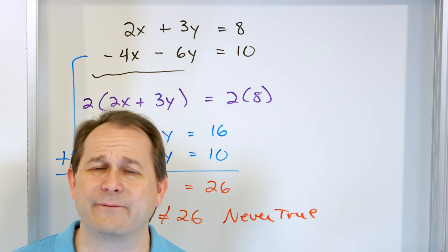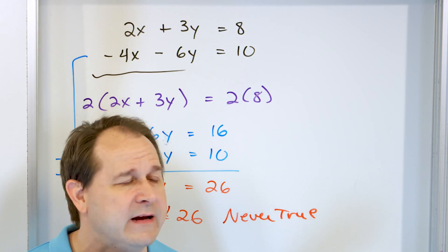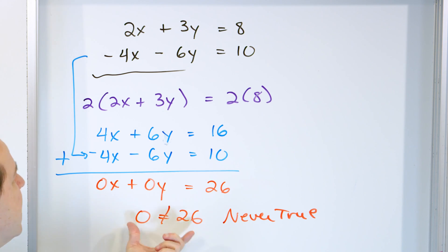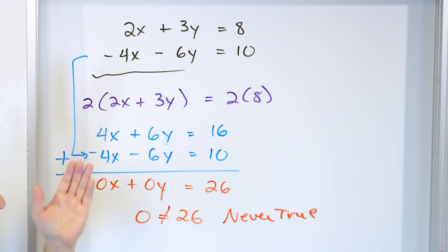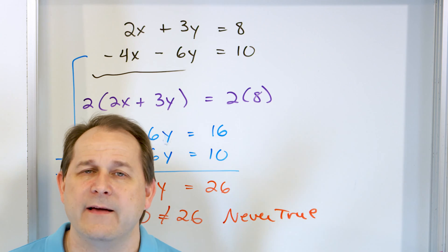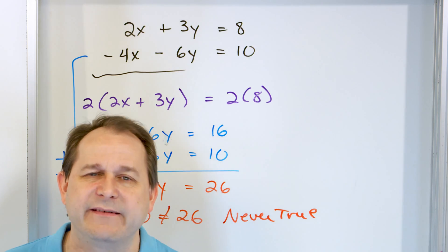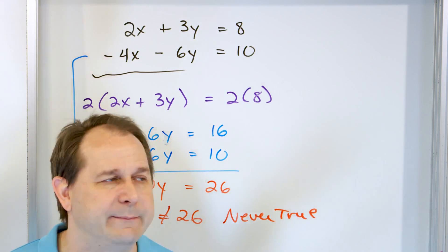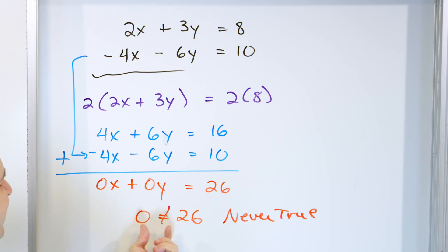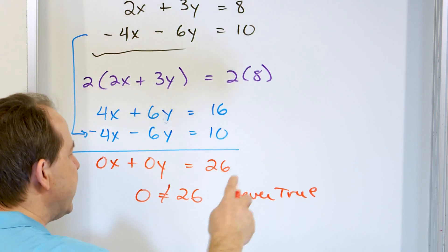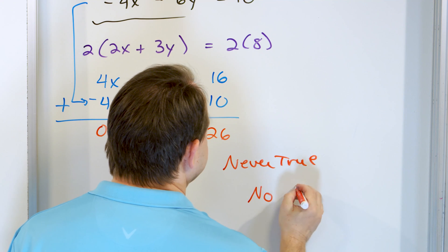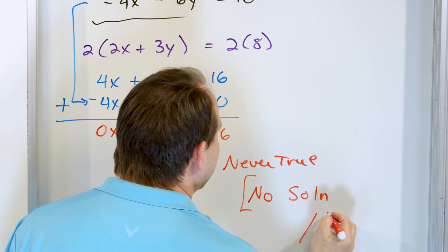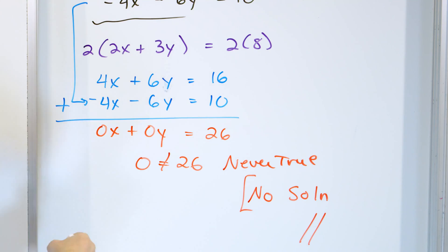This is the kind of way in which math can predict things. The answer you get is nonsense — it cannot be true. So these equations have no point where they are both true at the same time, because when you add them together you get something that's nonsense. So the result is no solution, and what this means is these are parallel lines.